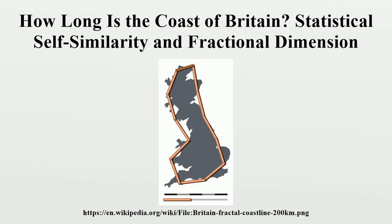Intuitively, if a coastline looks smooth it should have dimension close to one, and the more irregular the coastline looks the closer its dimension should be to two. The examples in Richardson's research have dimensions ranging from 1.02 for the coastline of South Africa to 1.25 for the west coast of Britain. Mandelbrot then describes various mathematical curves related to the Koch snowflake, which are defined in such a way that they are strictly self-similar, and shows how to calculate the Hausdorff dimension of each, with each curve having a dimension D between 1 and 2.